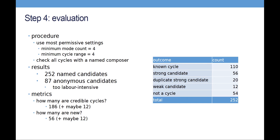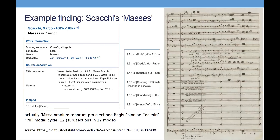A final example: a piece found in the data as masses in D minor. If you look at the incipits, you can see the modes are 1, 4, 6, 9, 10, 11, and 12. However, inspecting it more closely, the title is Missa Omnium Tonorum Pro Electione Regis Poloniae Casimiri — a mass composed in the form of a modal cycle, but only incompletely encoded in the RISM data. One of the manuscripts in Berlin confirms the fifth tone, proving it is actually a complete modal cycle.